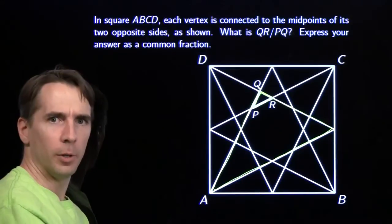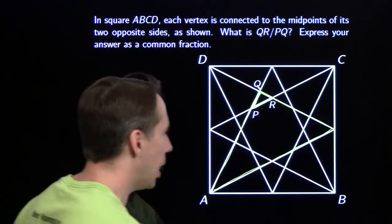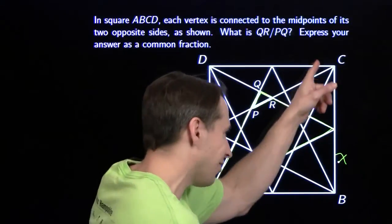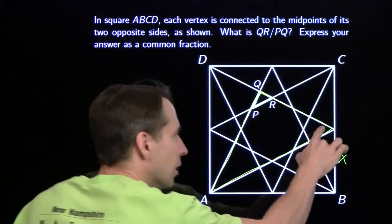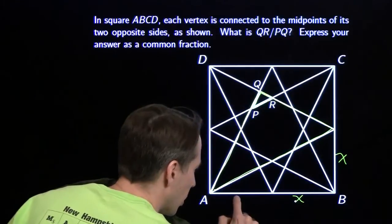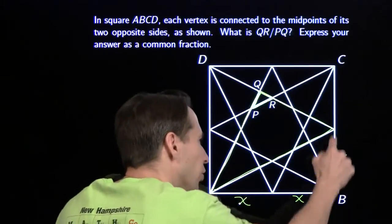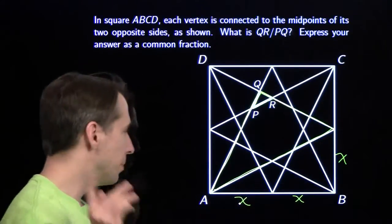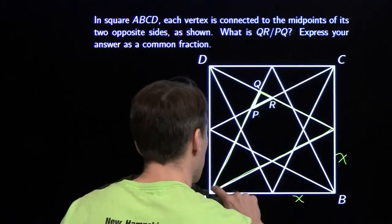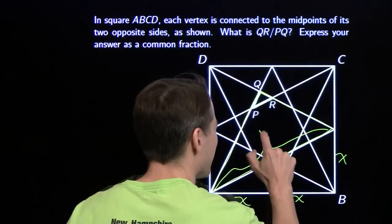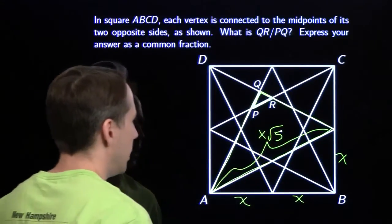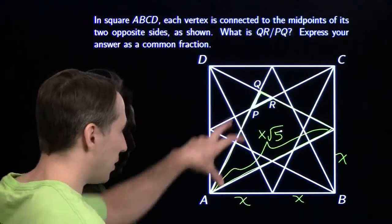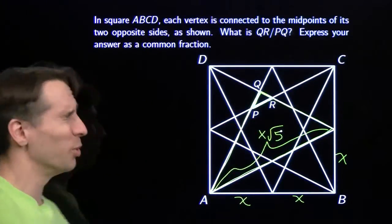I'm going to throw a variable on the screen and start chasing around lengths. I'm going to call half the side length x. This piece is x, and half the side length of the square is also x. I have a right triangle here, so I can use the Pythagorean theorem. Squaring this leg gives x squared, squaring this leg gives 4x squared, adding those up gives 5x squared, and taking the square root tells me this hypotenuse is x times the square root of 5.